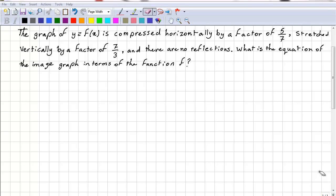Here's a question from chapter 3: The graph of y = f(x) is compressed horizontally by a factor of 5/7, stretched vertically by a factor of 7/3, and there are no reflections. What is the equation of the image graph in terms of the function f?